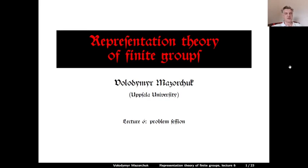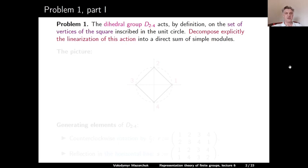Representation Theory of Finite Groups, Lecture 6, Problem Session. Today we will try to solve several problems related to the content of the first five lectures. Problem 1: The dihedral group D_{2×4} acts, by definition, on the set of vertices of the square inscribed in the unit circle in R². Decompose explicitly the linearization of this action into a direct sum of simple modules.